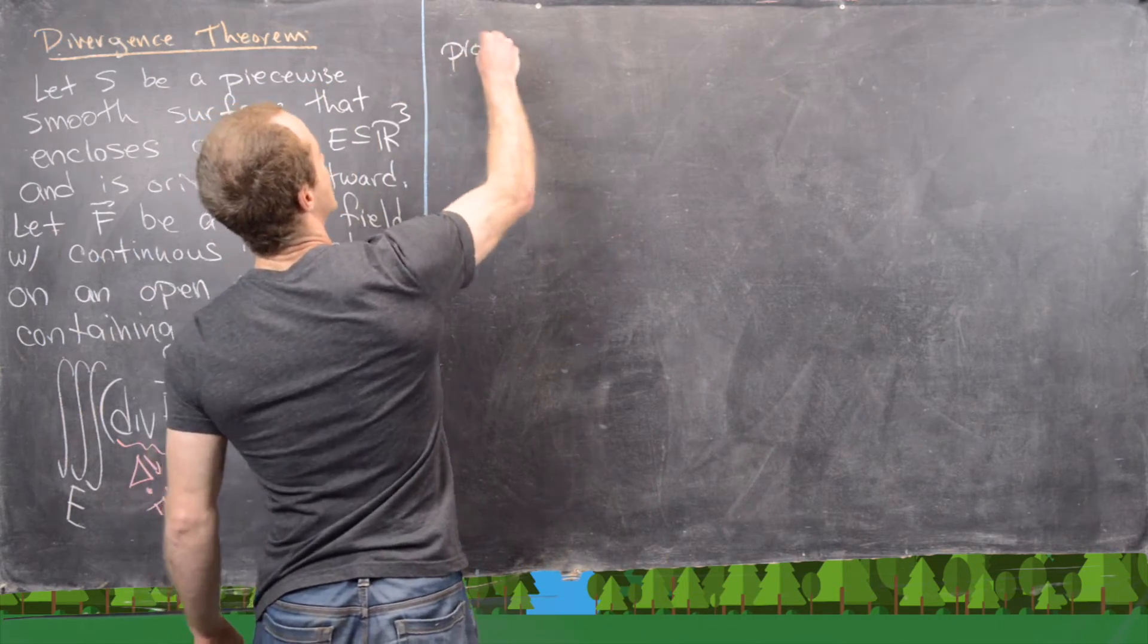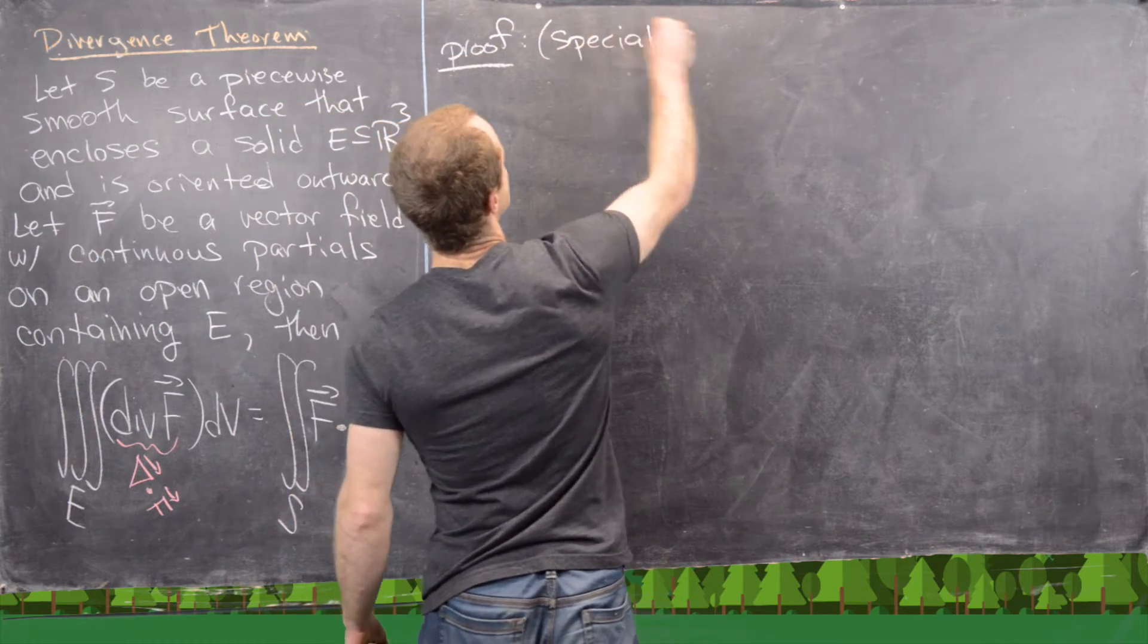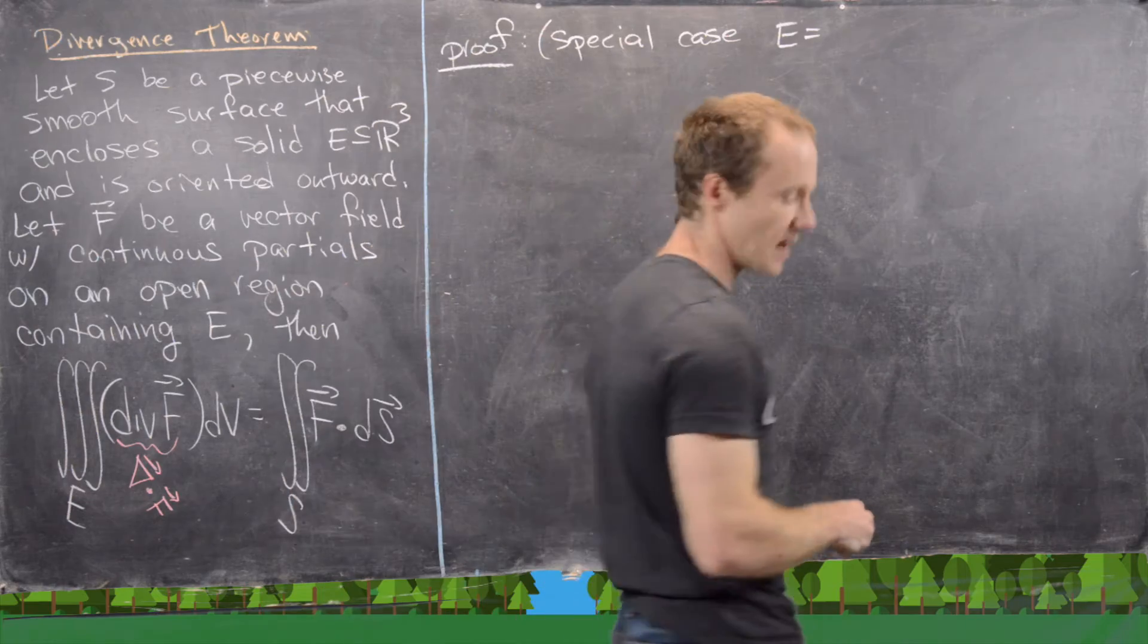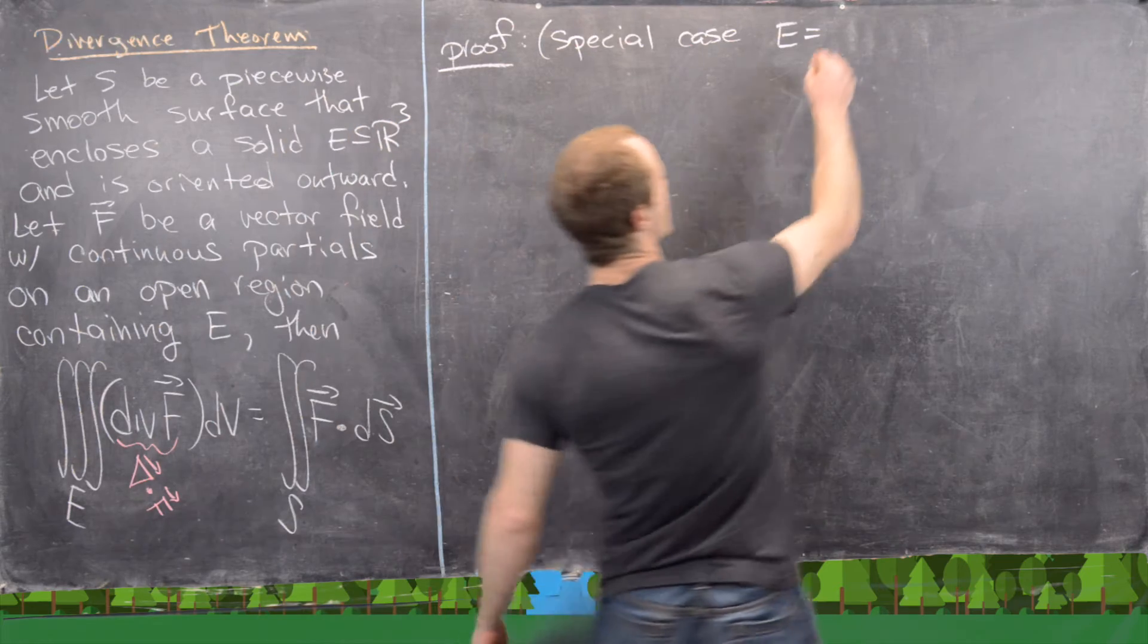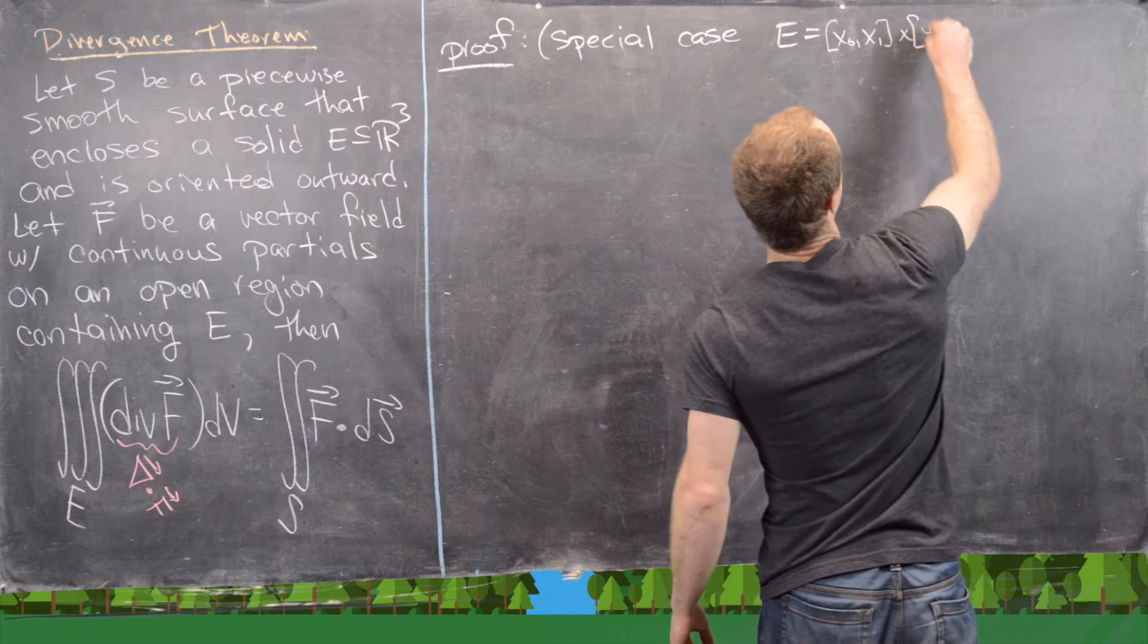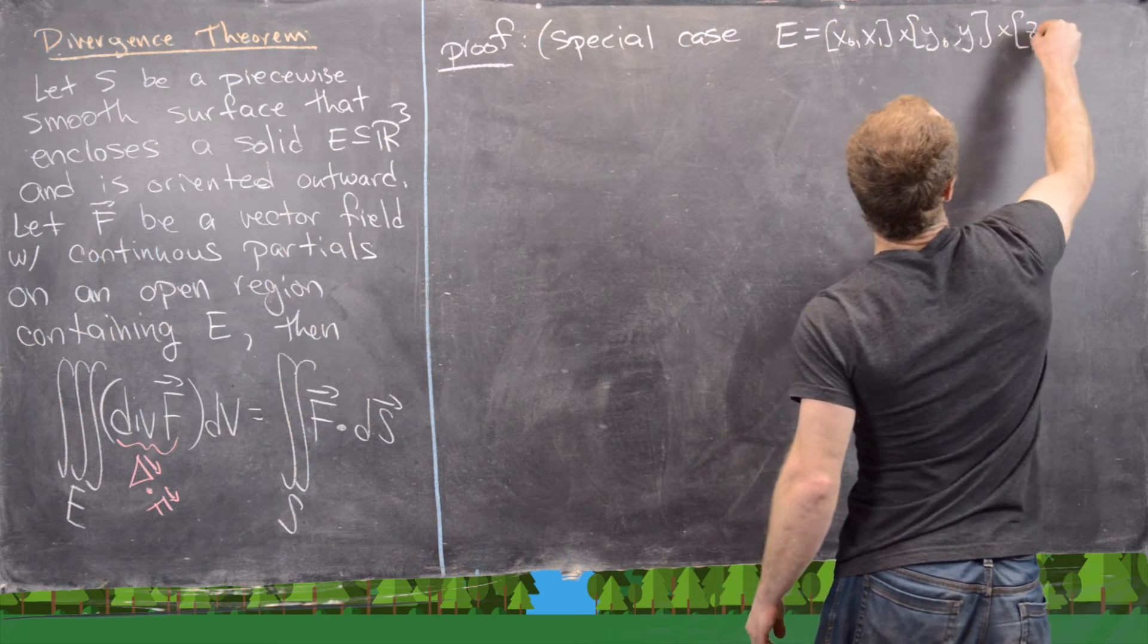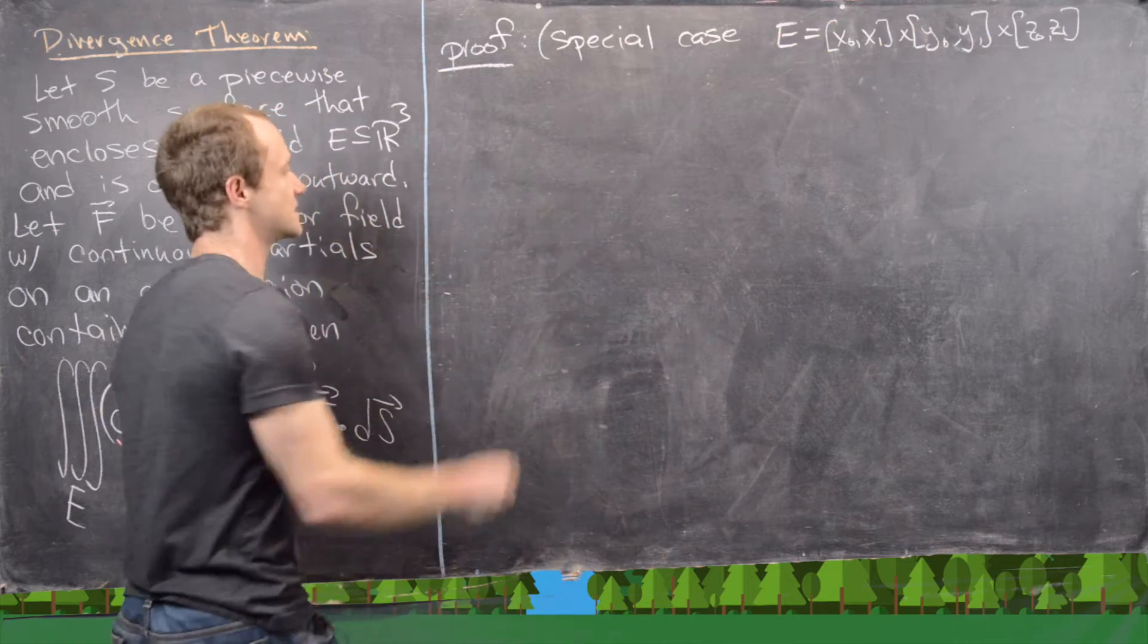Let's go ahead and look at that. So proof, special case, where E is equal to a rectangular box. But that means it can be the cross product of three different intervals. So we'll call those intervals [x₀, x₁] × [y₀, y₁] × [z₀, z₁]. Let's get a picture going of what's happening here.